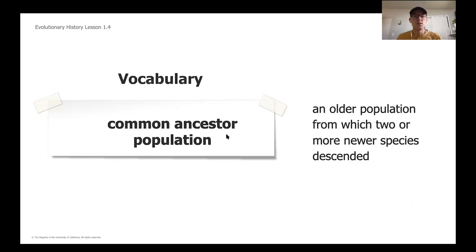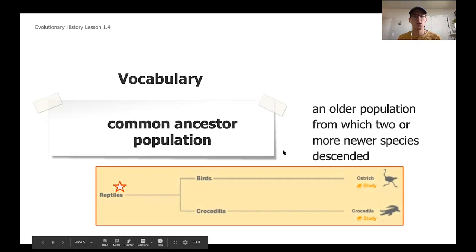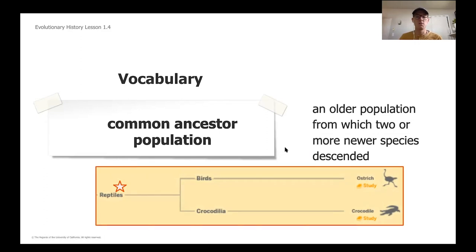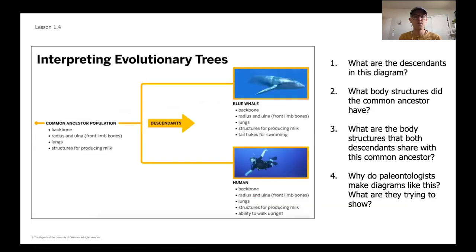The other key vocabulary word is "common ancestor" — an older population from which two or more newer species descended. Looking at that same part of the tree, reptiles are the common ancestor population that eventually split off and evolved into birds and crocodiles. So our two terms to keep in mind today are descendant species and common ancestors.